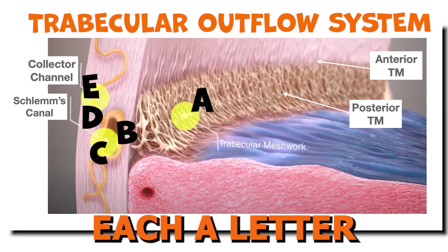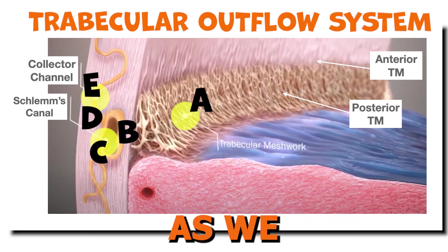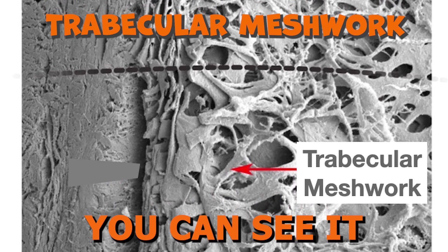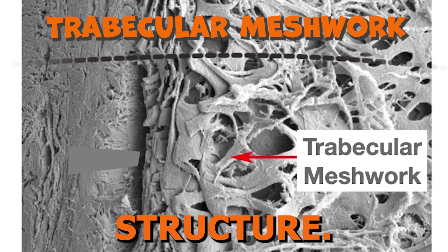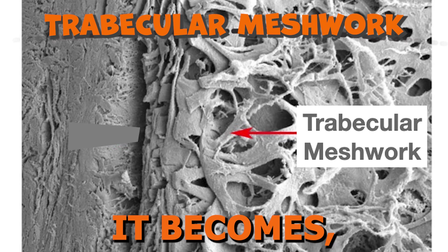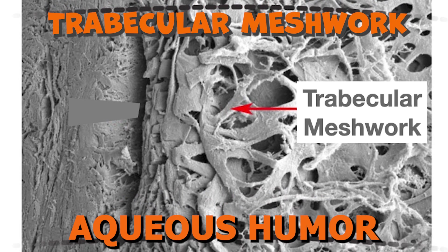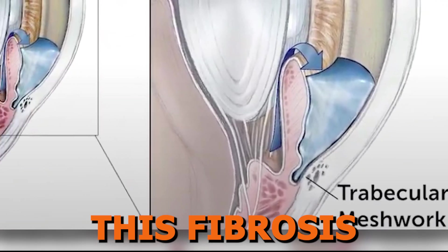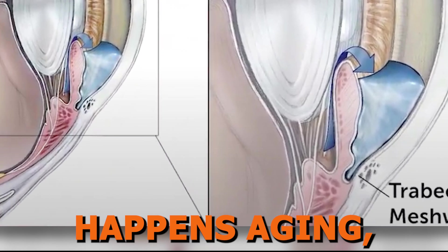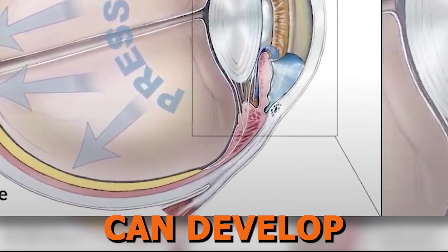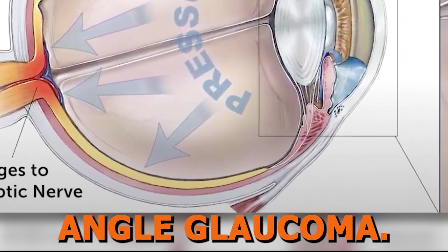Point A is the trabecular meshwork, which is a porous structure. The more fibrotic and rigid it becomes, the harder it is for aqueous humor to flow through it. This fibrosis process happens with aging and is one of the ways that patients can develop primary open angle glaucoma.